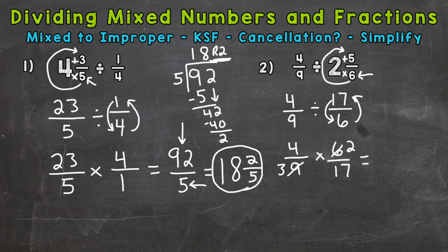4 times 2 is 8. 3 times 17 is 51. Look to see if we can simplify 8 over 51. The only common factor between 8 and 51 is 1, so we are in simplest form and we are done there.